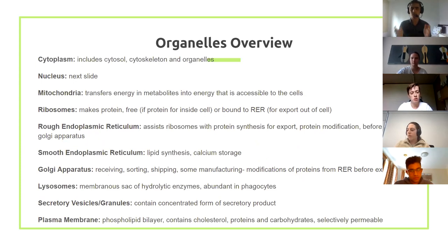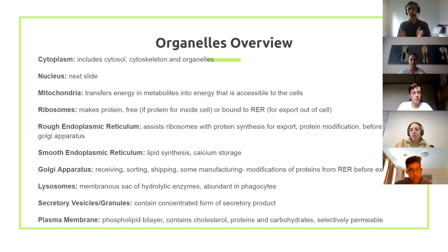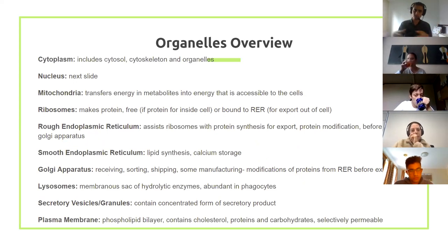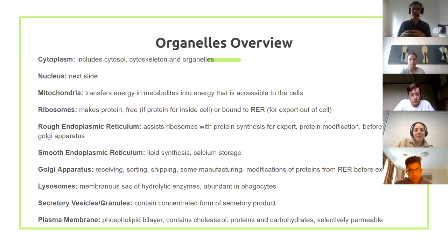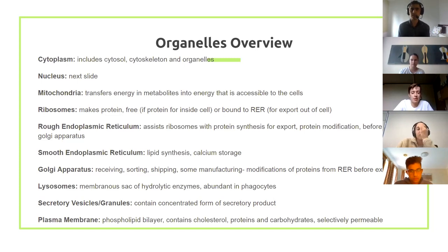In terms of organelles, you need to know some key ones — not all will be relevant, so we'll revisit specific ones later in the year. The cytoplasm contains everything: the cytosol is the liquid itself, but the cytoplasm includes everything else too. Then there's the nucleus, which we'll cover shortly. The mitochondria is literally the powerhouse of the cell — where respiration reactions occur and energy is transferred into metabolites. It also contains mitochondrial DNA, which is inherited maternally.